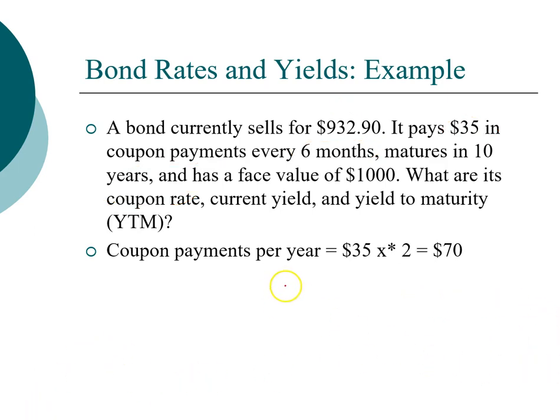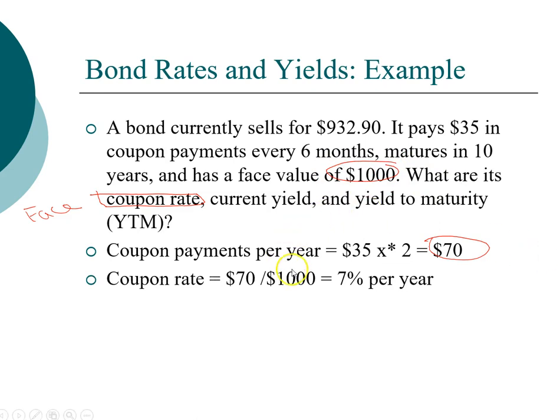Next, we want to remember what coupon is associated with. Coupon rate is always associated with face value. So when we compute the coupon rate, we take the $70 that we earn per year and divide that by the face value. So the coupon rate is $70 divided by $1,000, which gives us 7% per year. Again, coupon rate is always related to face value.